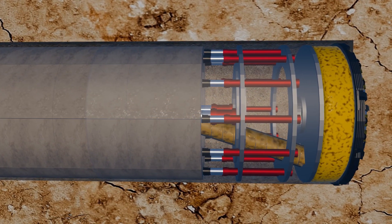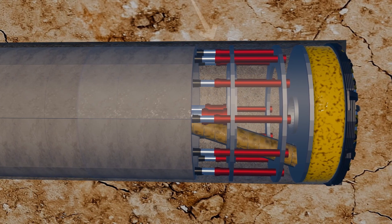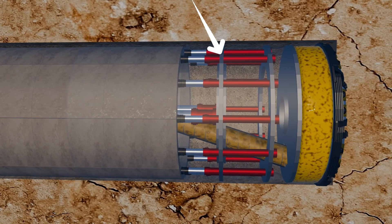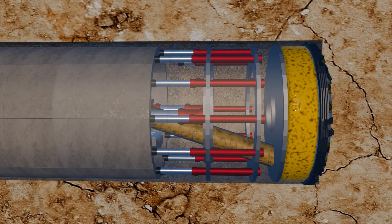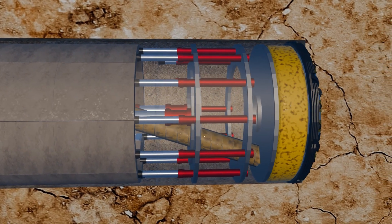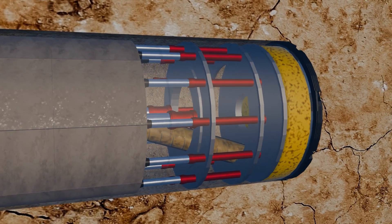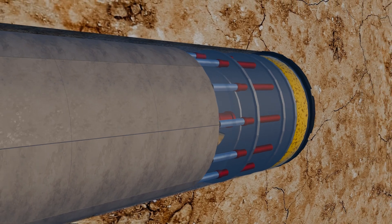thrust cylinders were employed to push the TBM head forward, ensuring it remained aligned on the intended tunnel path. This process, known as tunnel lining, involves using hydraulic thrust cylinders to maintain the TBM's position as it progresses through the tunnel.